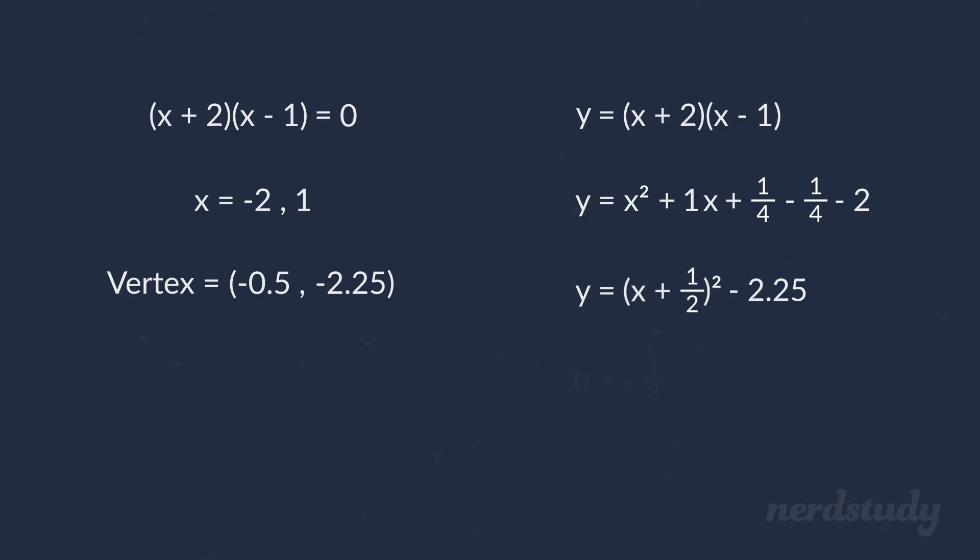As we can see, our h is negative 1 over 2, and we know that because the original vertex form is supposed to be this, meaning that if we had a plus 1 over 2 in here, then h is equal to negative 1 over 2. Our k is negative 2.25, and since the vertex is hk, we indeed have a vertex of negative 0.5, negative 2.25.